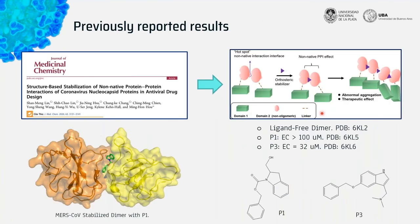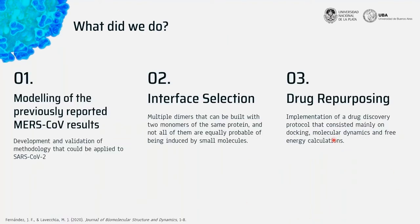The mechanism of action published in that paper proposes that using a small molecule it is possible to stabilize non-native protein-protein interactions, causing abnormal aggregation of the protein and consequently a therapeutic effect. The authors published three crystal structures we used as a model: one ligand-free dimer and two with different ligands, P1 and P3. Domain one is the C-terminal domain responsible for oligomerization, and the N-terminal domain is the red one we worked with.